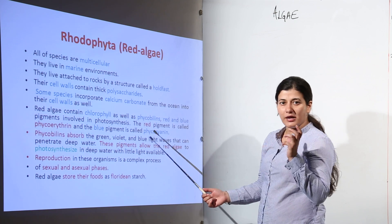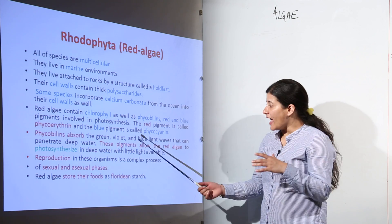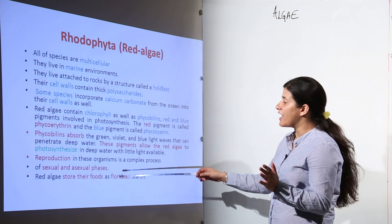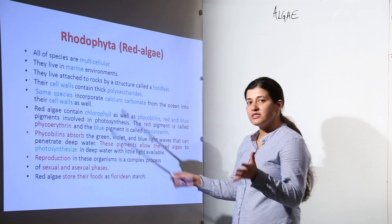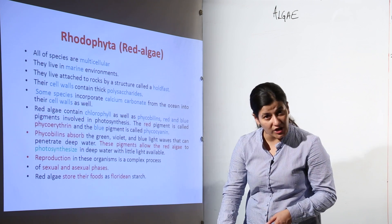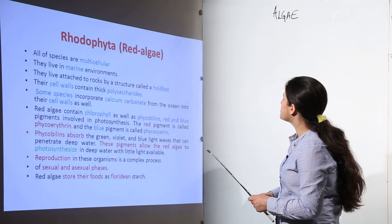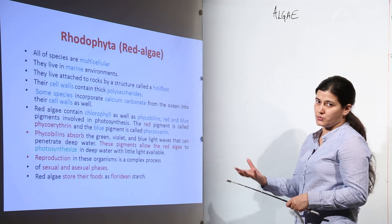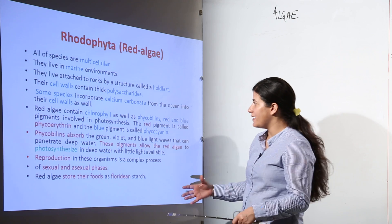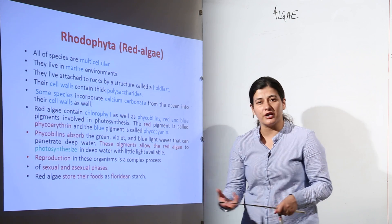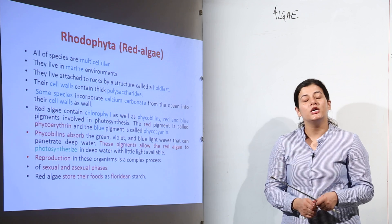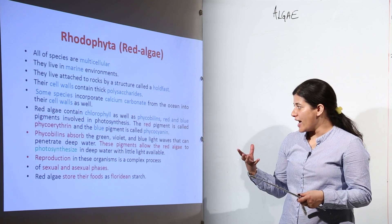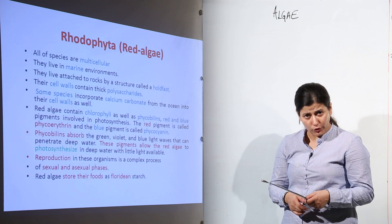The cell wall is often made up of calcium carbonate, and the pigments apart from chlorophyll include phycoerythrin. Regarding flagella, red algae do not have any — flagella are absent. They are present in marine or brackish water, not freshwater. Food is stored in the form of floridian starch.